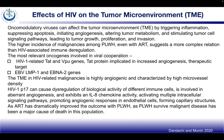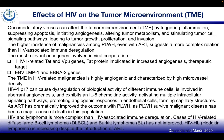ART has dramatically improved the outcome of people living with HIV, yet survival from malignant disease has been a major cause of death in this population. HIV and lymphoma is more complex than HIV-associated immune dysregulation. In cases of HIV-related diffuse large B-cell lymphoma and Burkitt lymphoma, outcomes have not improved, and HIV Hodgkin's lymphoma is increasing despite the introduction of ART.